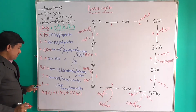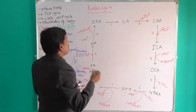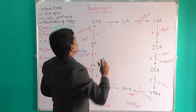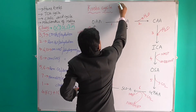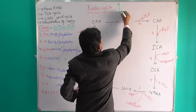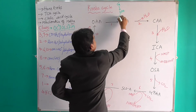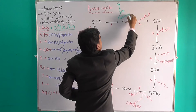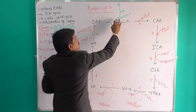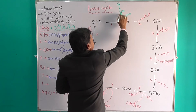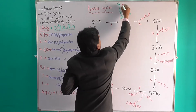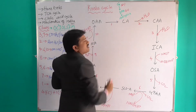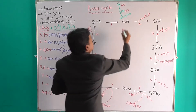Before the Krebs cycle, the glycolysis cycle occurs. Glucose is modified into two pyruvic acid molecules. These two pyruvic acid molecules are then modified into Acetyl-CoA (Acetyl Coenzyme A).